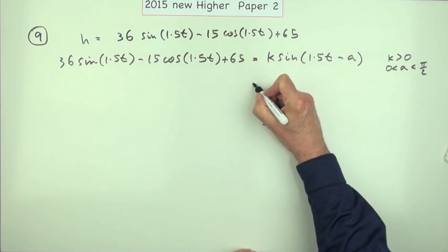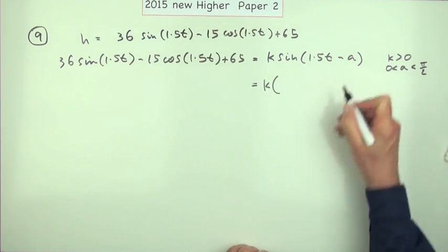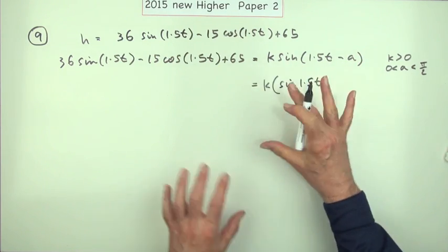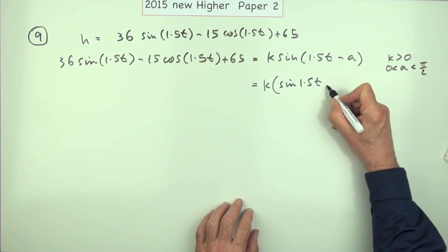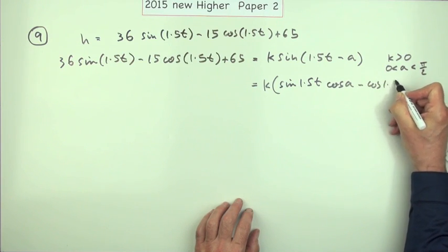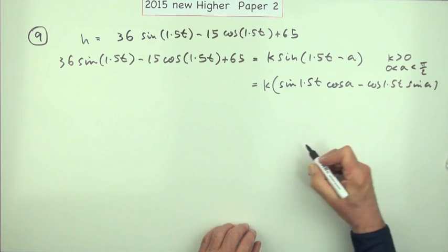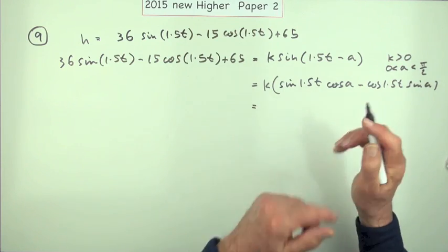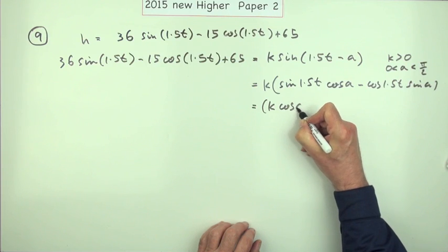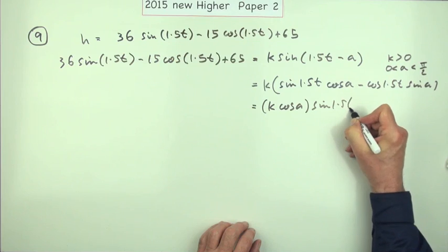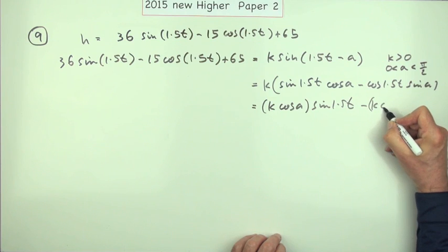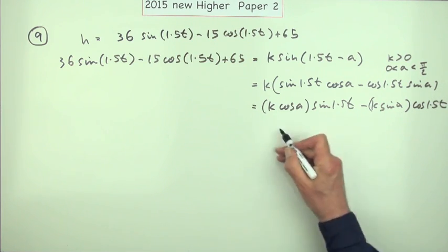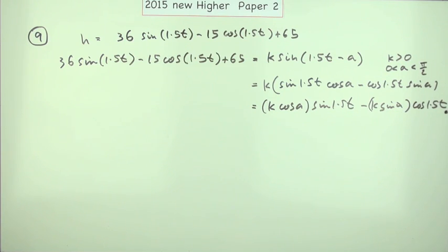You have to express it in this form. I'll expand the sine of a difference, so that'll be sine of 1.5t — notice there's no degree signs, this is all in radians. So it'll be sine 1.5t cos A minus cos 1.5t sin A. I'll rearrange that so I can clearly see the coefficient of each term: K cos A multiplying sine 1.5t, and minus K sin A multiplying cos 1.5t. However you write this out, that's the first mark just for expanding it.